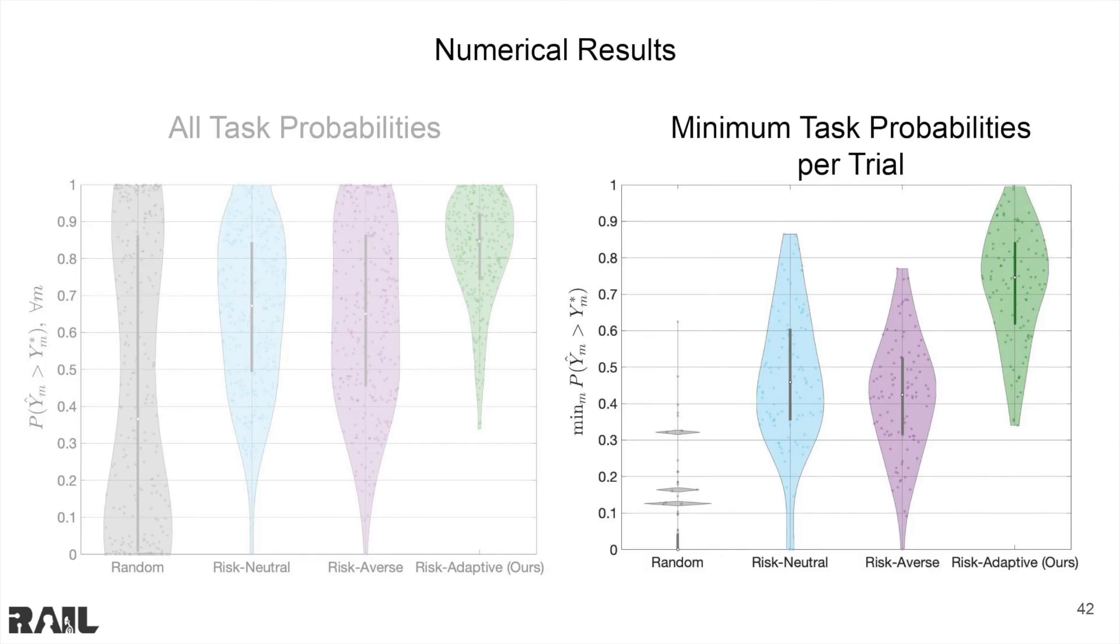However, this does not tell the whole story. Here, we report the minimum task probability per coalition formation problem. That is, in one coalition formation problem, the task with the lowest probability of success. We can see in green, our method improves on the minimum task probability per trial.